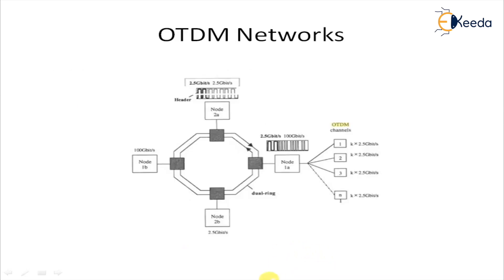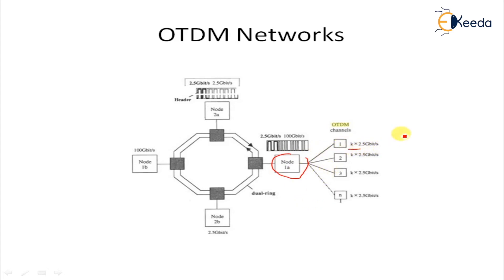In this particular diagram, one network is considered to illustrate the basic configuration of the network. In this figure, there are four nodes: 1A, 1B, 2A, and 2B. Node 1A has the capability of transmission with an aggregate bit rate of 100 gbps by optical time division multiplexing of various local channels. These channels can operate with k multiples of 2.5 gbps.